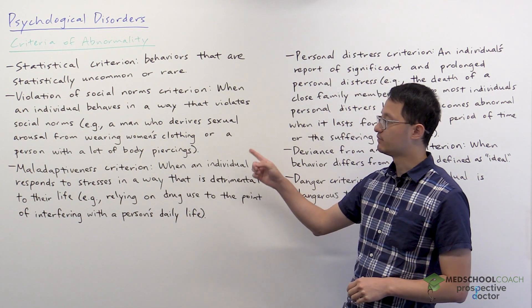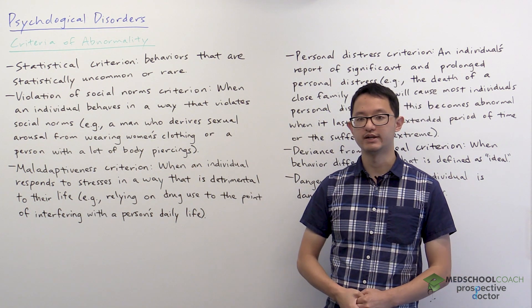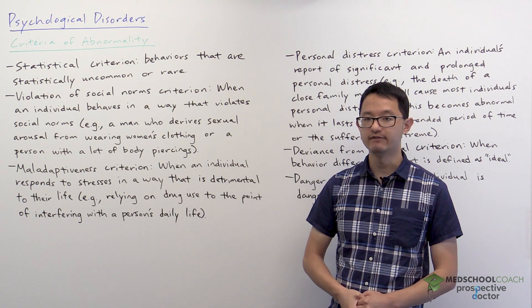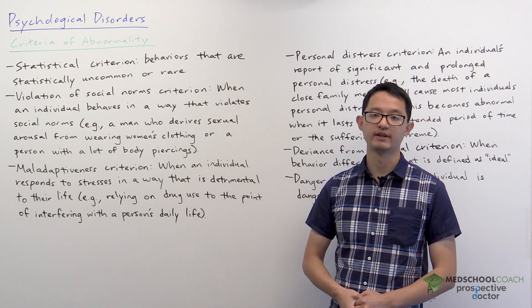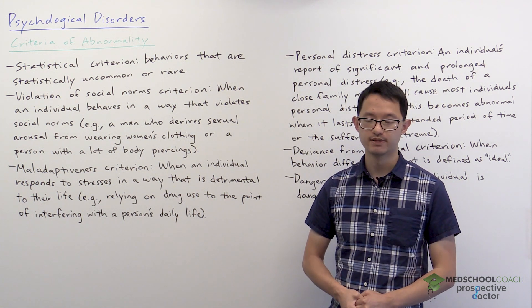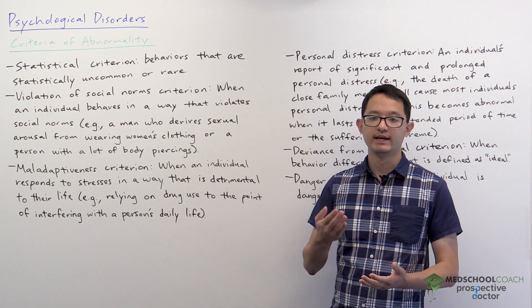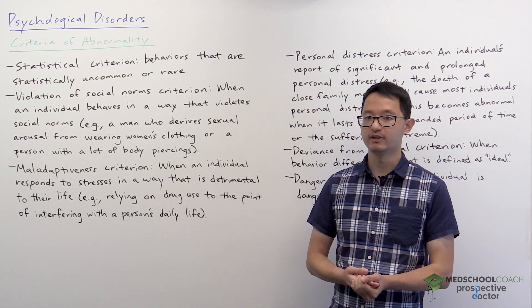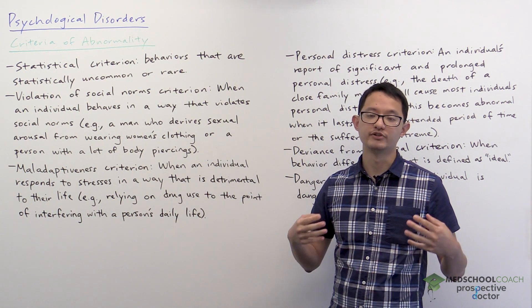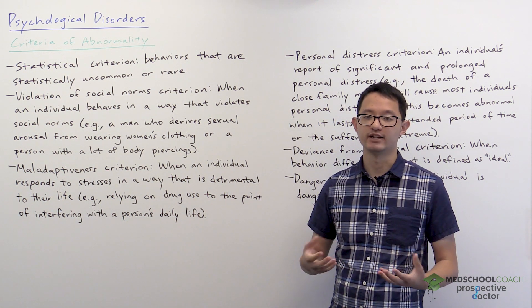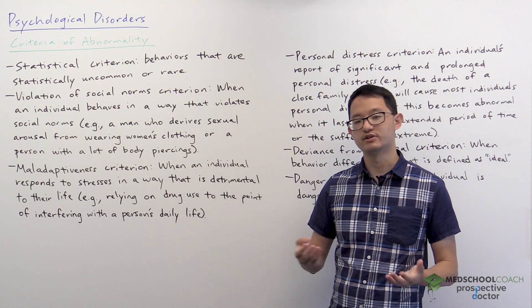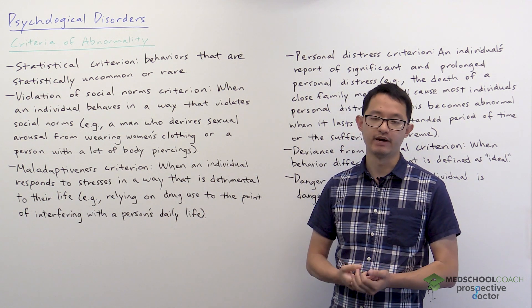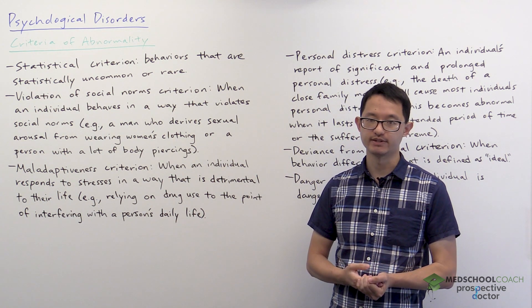Next, we have the violation of social norms criterion. This is referring to behaviors that violate social norms. Examples would be a man who wears women's clothing in order to get sexual arousal, or a person with an excessive amount of body piercings.